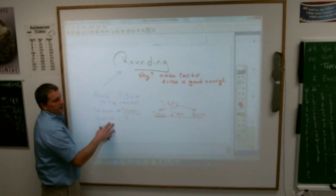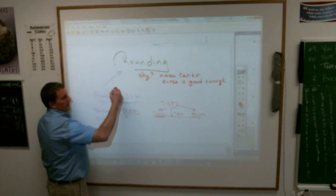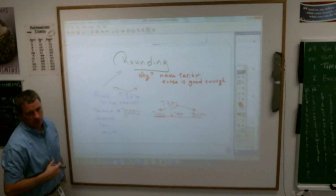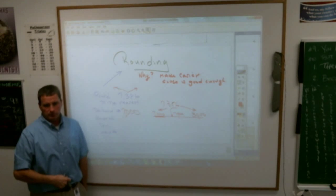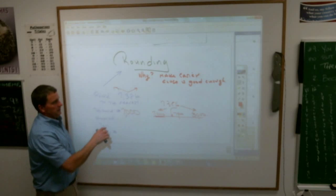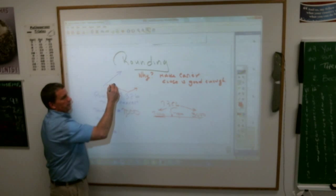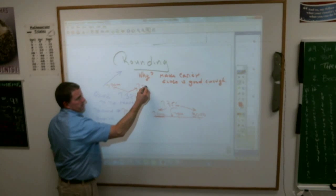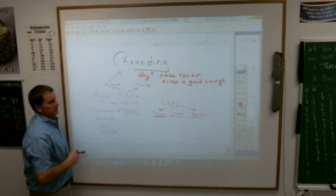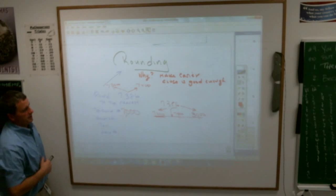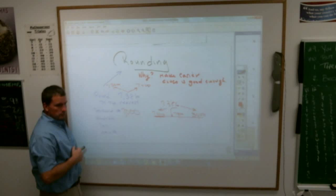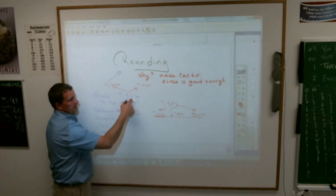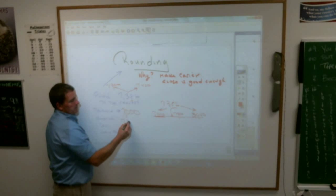What about to the nearest hundred? What are my two possible answers for rounding 7,386 to the nearest hundred? You're counting by hundreds. What are your two choices? Either it's going to be 7,300, or it's going to be 7,400, correct? Those are my two hundreds choices. Which one is it closer to? Jules? 7,400. And why? Because of this 8 right here, it means it's going to be much greater, 7,400.